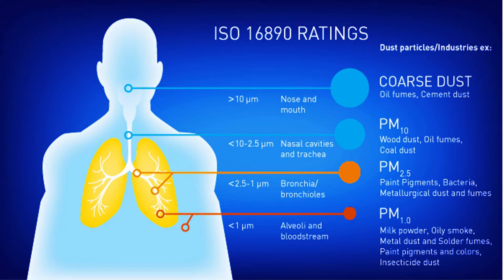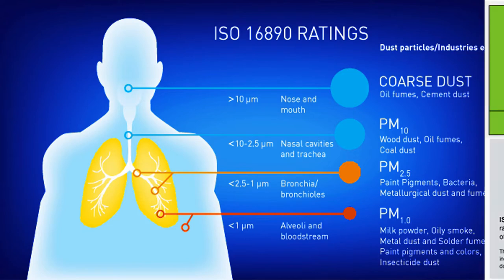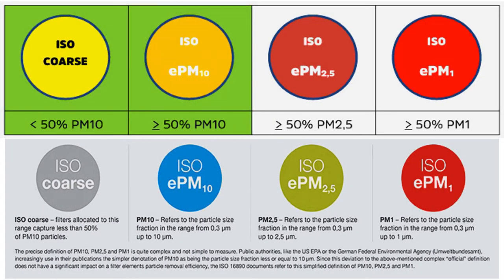The new ISO 16890 standard divides air filters into 4 groups. A prerequisite for each group is that a filter captures at least 50% of the appropriate particle size range. If the filter captures more than 50% of PM1 particles, it will be grouped as an ISO ePM1 filter. The respective efficiency is then reported rounded in 5% increments. Alongside fine dust filters, the new ISO standard also evaluates coarse dust filters as ISO Coarse — that is, filters that capture less than 50% PM10.